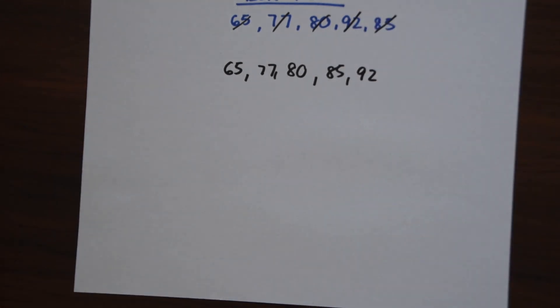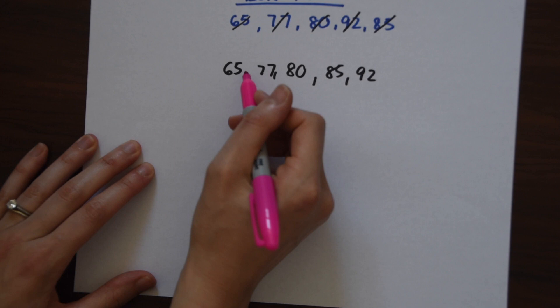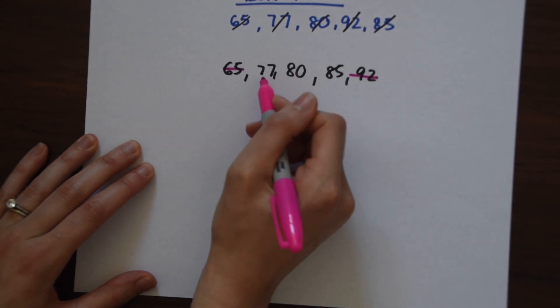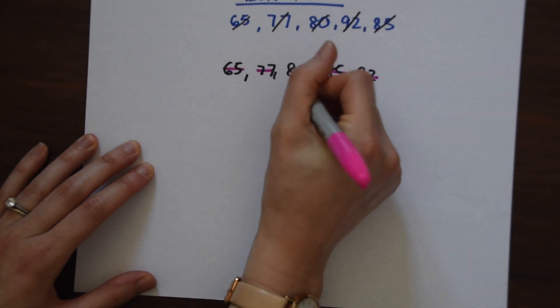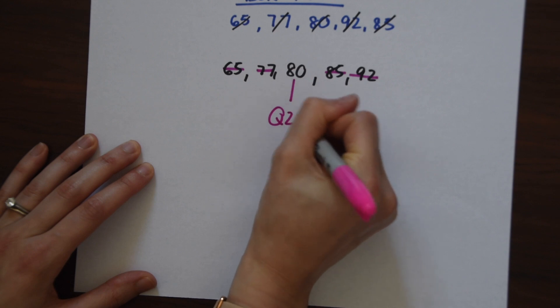To make a box plot we need to find three different quartiles and all quartiles mean is the medians. So the second quartile is always just your normal median. To find the normal median we're just going to cross off one by one to get that middle number. So notice quartile 2 is equal to 80.